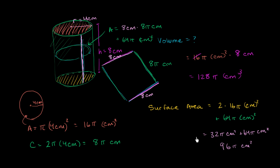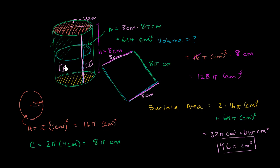Notice that when we did surface area, we got our answer in square centimeters. That makes sense because surface area is a two-dimensional measurement — we're thinking about how many square centimeters fit on the surface of the cylinder. When we did the volume, we got cubic centimeters, because we're calculating how many 1 by 1 centimeter cubes fit inside the structure. Hopefully that clarifies things a bit.